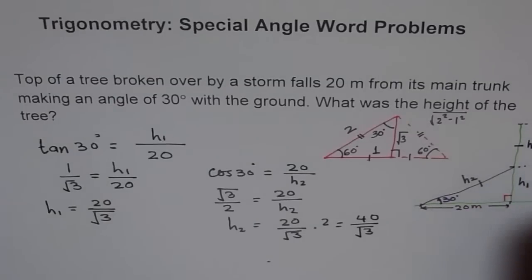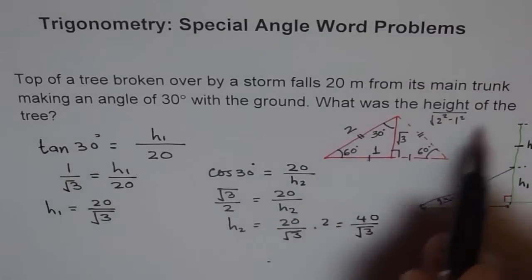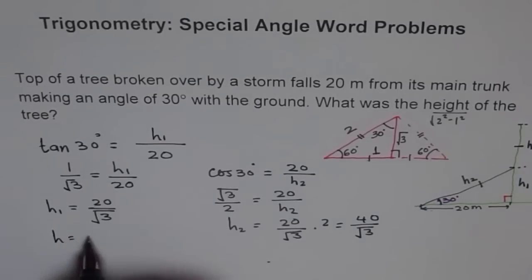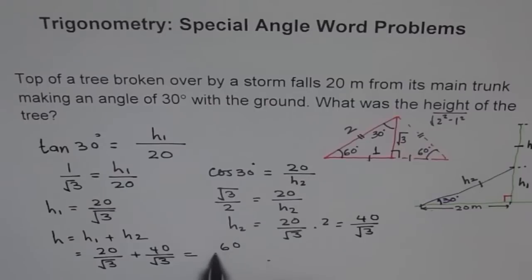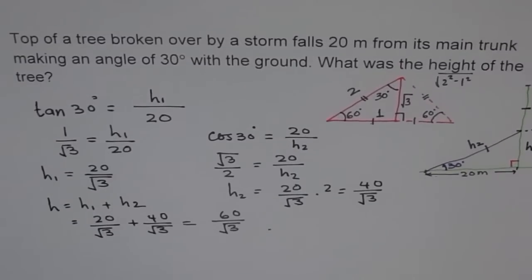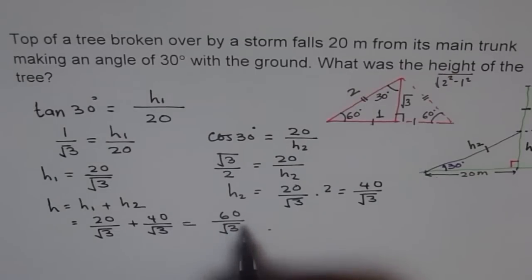The total height of the tree is h1 plus h2, which is 20 over square root 3 plus 40 over square root 3, giving us 60 over square root 3. Sometimes we don't want to put a radical in the denominator. In that case, we rationalize — we multiply and divide by square root 3. You could write the answer like this, but we prefer to write it in rationalized form.